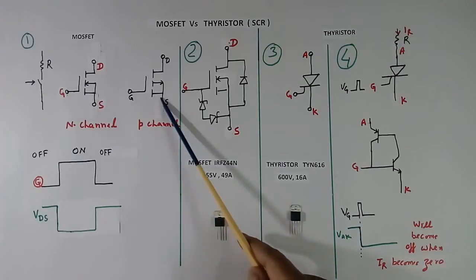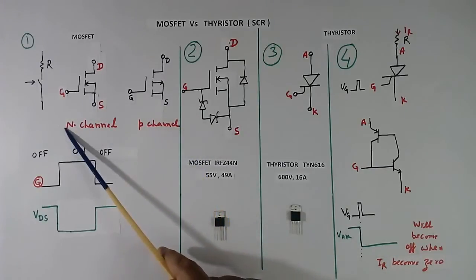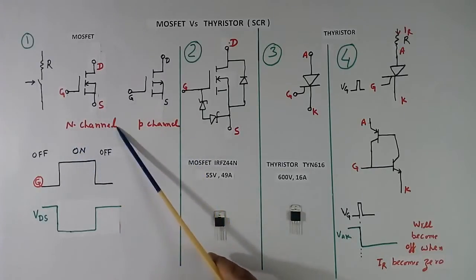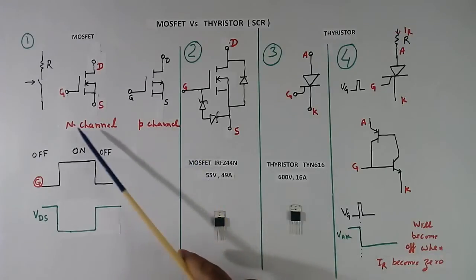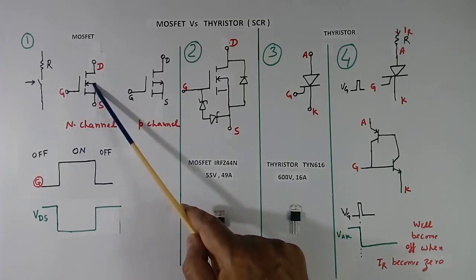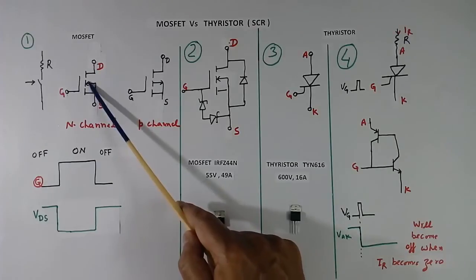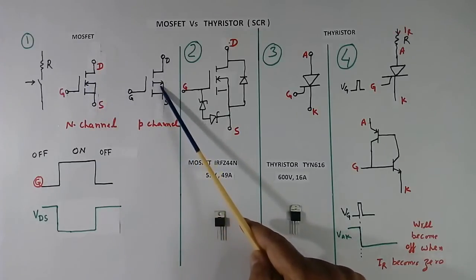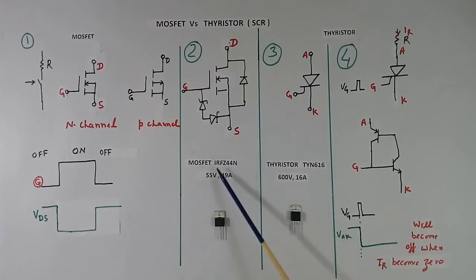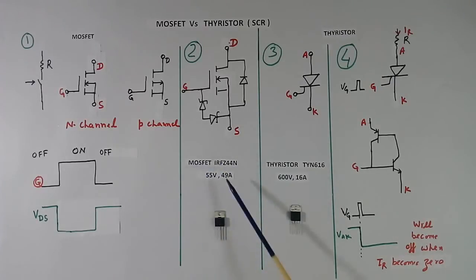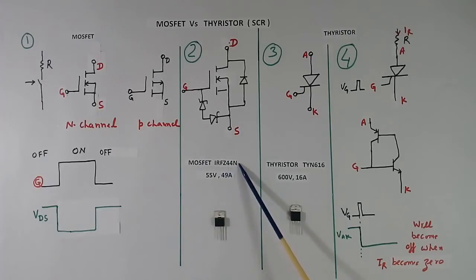MOSFETs are 2 types: one is N-channel, one is P-channel. This arrow difference you are seeing. I have one MOSFET with me — this is MOSFET IRFZ44N.